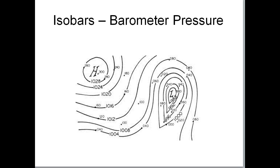Here's an example of isobars showing barometric pressure. If you were able to walk along one of these lines, you would be walking at about 106 millibars of pressure. As long as you walk along that bar, your elevation is not going to change much.